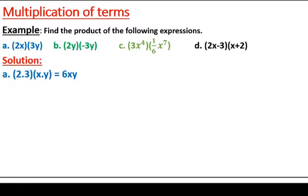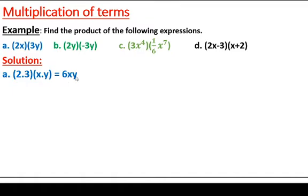In the first example we have 2x times 3y. These terms are not like, but we can still multiply them. When we multiply terms, we multiply the coefficients to get the coefficient of the product, and we multiply the variables. 2 times 3 is 6, and that 6 is multiplied with xy, so the product of 2x and 3y is 6xy.